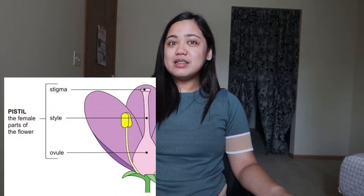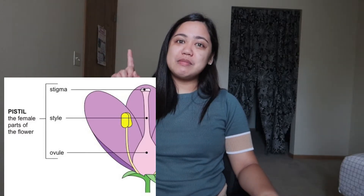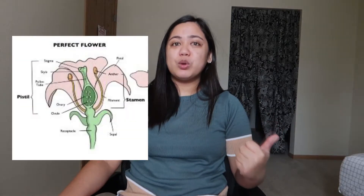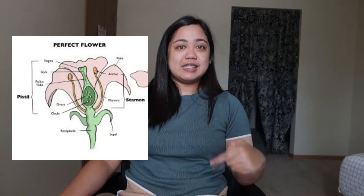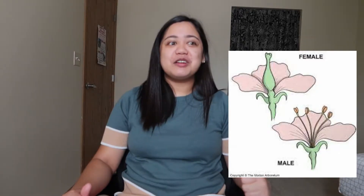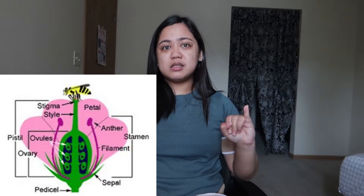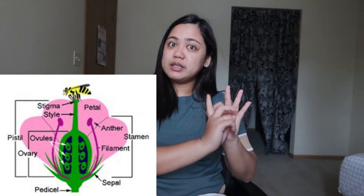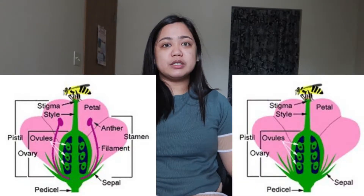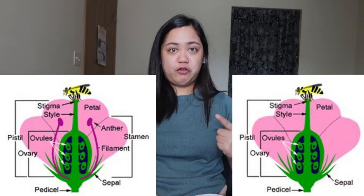The female part is called the pistil, which is composed of the stigma, style, and ovary. We also learned about perfect and imperfect flowers. Perfect flowers have both male and female parts inside them. Imperfect flowers have either male parts or female parts but not both. We also have complete and incomplete flowers — complete flowers have four flower parts: petals, sepals, stamens (the male part), and pistil (the female part). Incomplete flowers are missing one or more of those four parts.